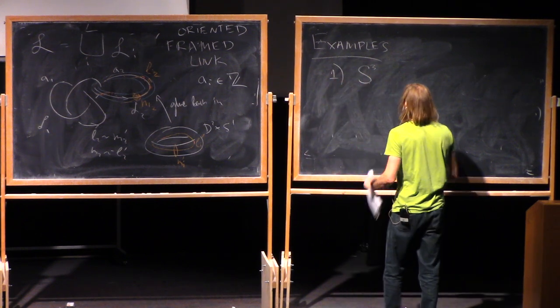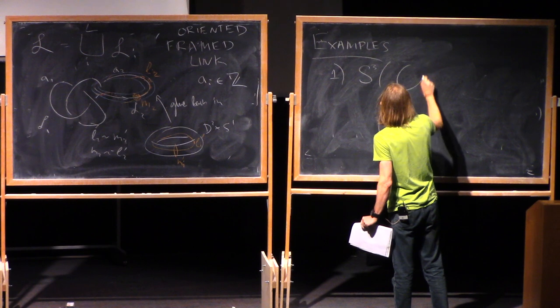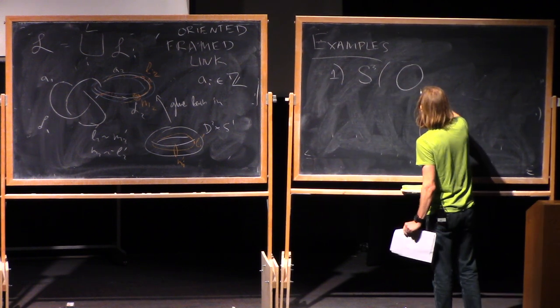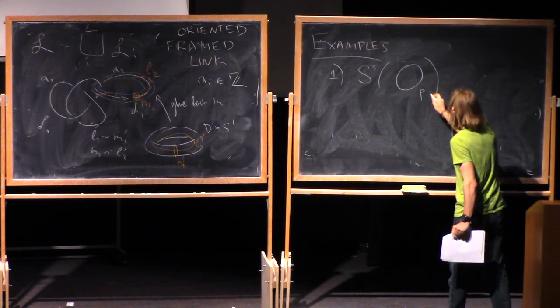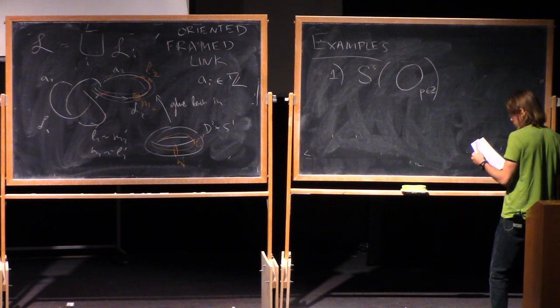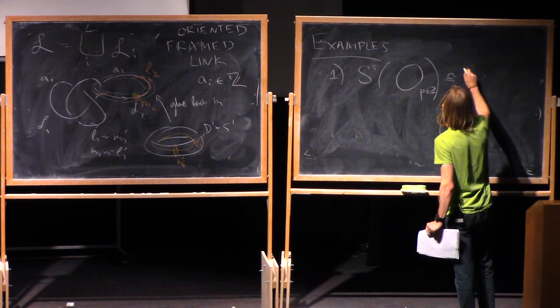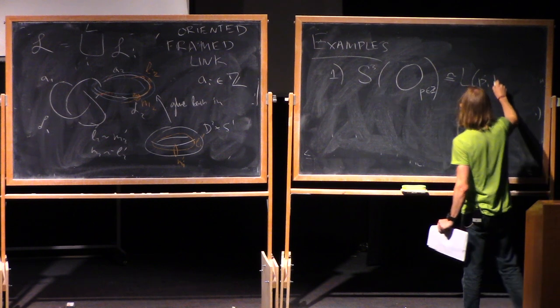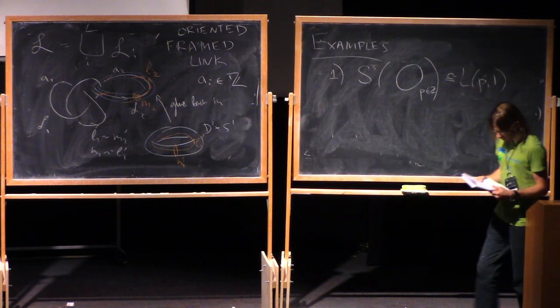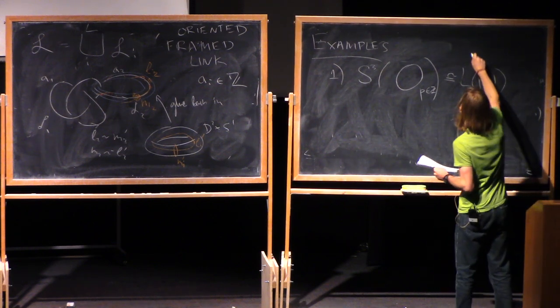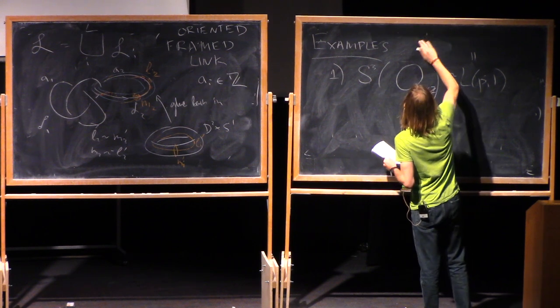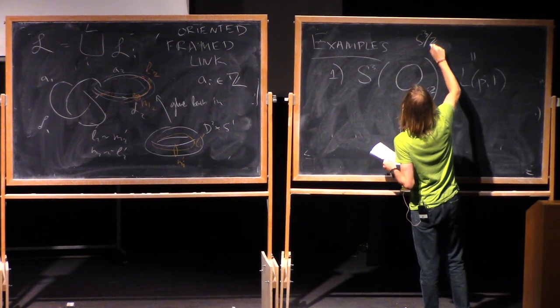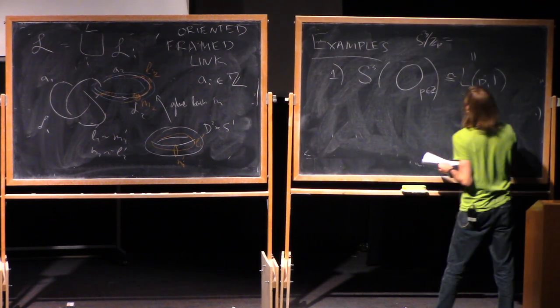Let me give you some examples. If I make a Dehn surgery on the unknot with framing p, again we specify framing by some integer, the result is lens space LP1.